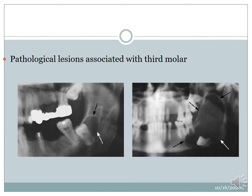These are a few pictures showing the pathological reasons for removal — a small lesion, mostly a dentigerous cyst, or a large lesion which can be a tumour on the other side.